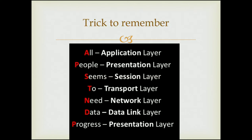A very easy trick to remember the order of the seven layers is to remember the simple sentence: 'All people seems to need data progress,' where 'All' stands for Application, 'People' for Presentation, 'S' for Session, 'T' for Transport, 'N' for Network, 'D' for Data Link, and 'P' for Physical layer.